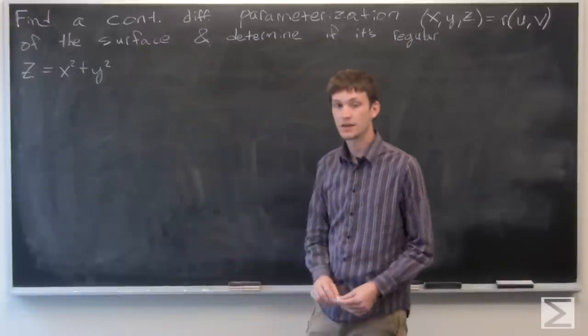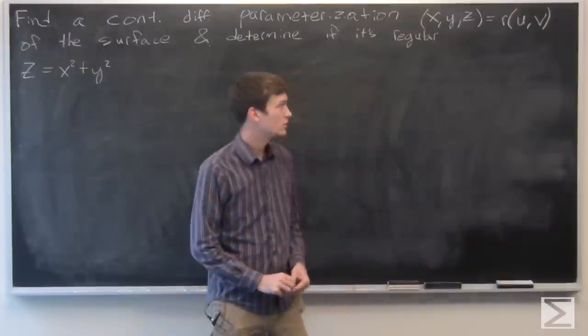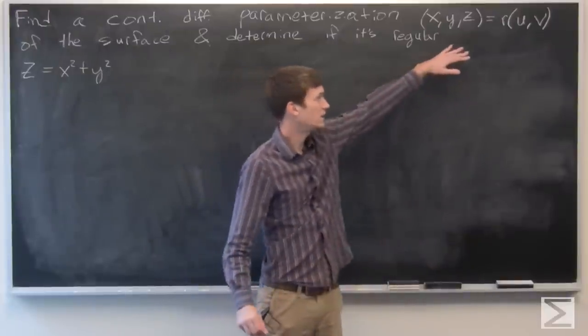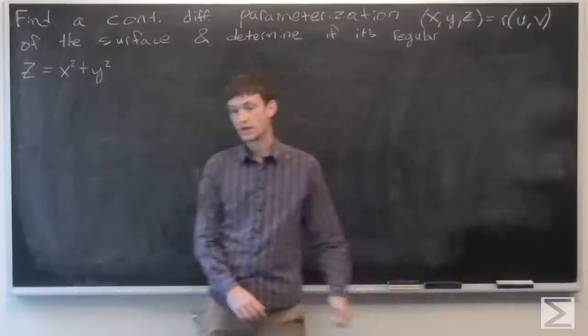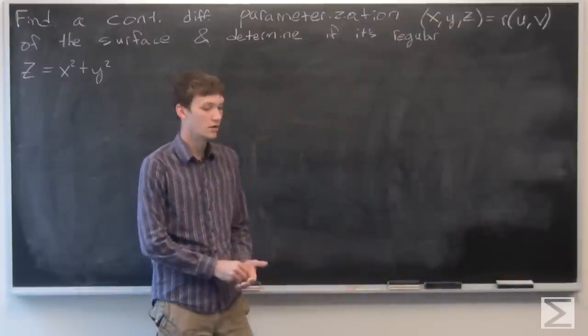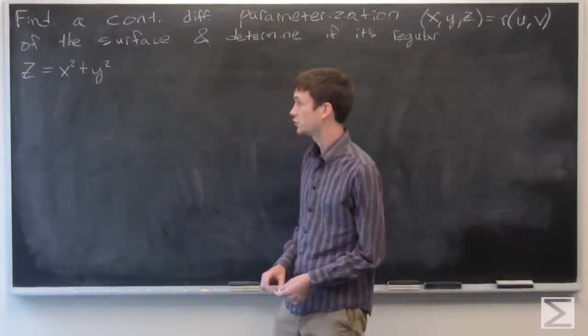In this problem we're asked to find a continuously differentiable parameterization x, y, z equals r of u, v of the surface and determine if it's a local regular parameterization.